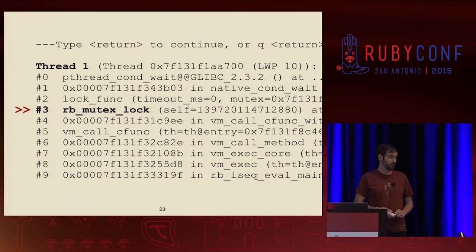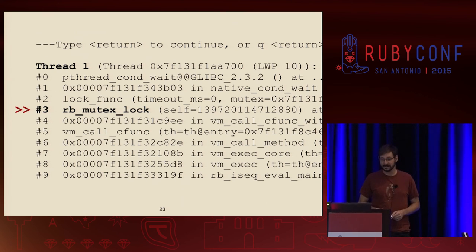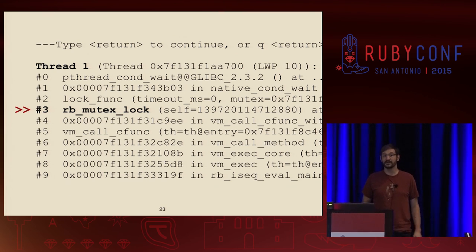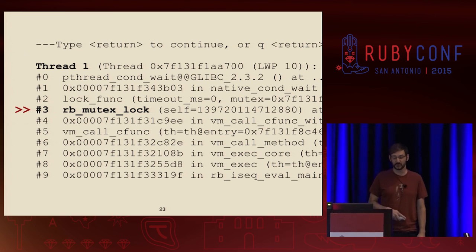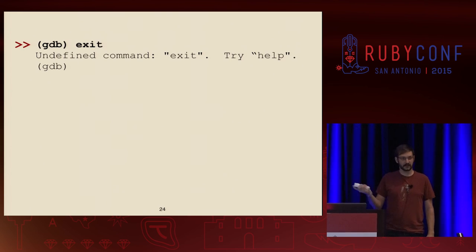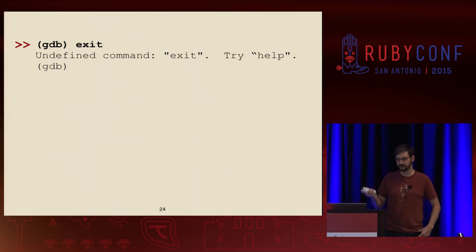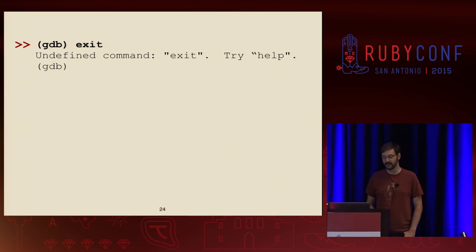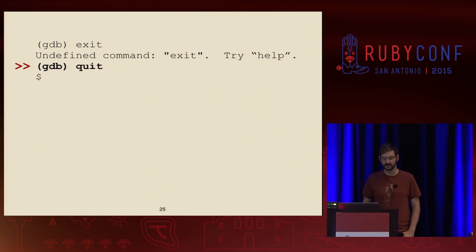So with this information in hand, we can go to our coworker who thought they were so smart putting multithreading into the thing, point out that they may well have introduced a deadlock, and hopefully they're smart enough to fix it — your mileage may vary depending on who it is. And having done so, we want to get out of GDB. You type exit, and well, exit's not actually defined unfortunately. So we'll quit instead.